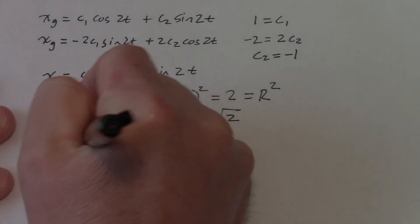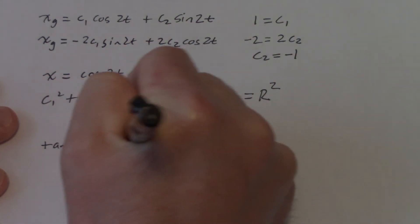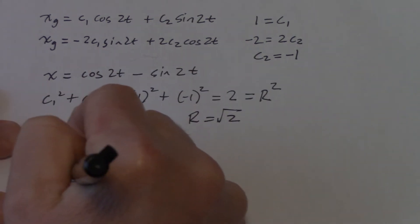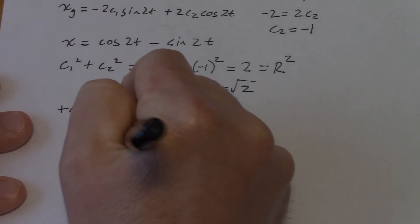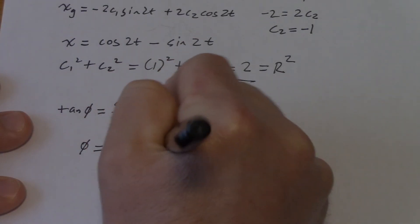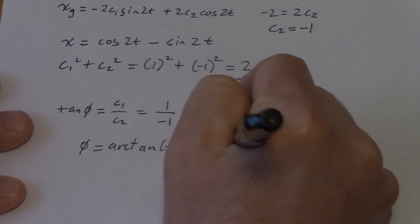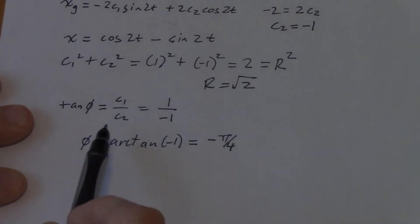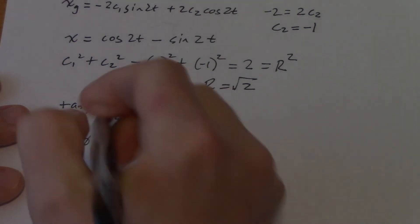Tangent of phi, that's supposed to be C1 over C2, which is 1 over negative 1. So phi is the arctan of negative 1, which is negative pi over 4. Now, with the exception that, remember, C2 is negative. That means I have to add pi to it.